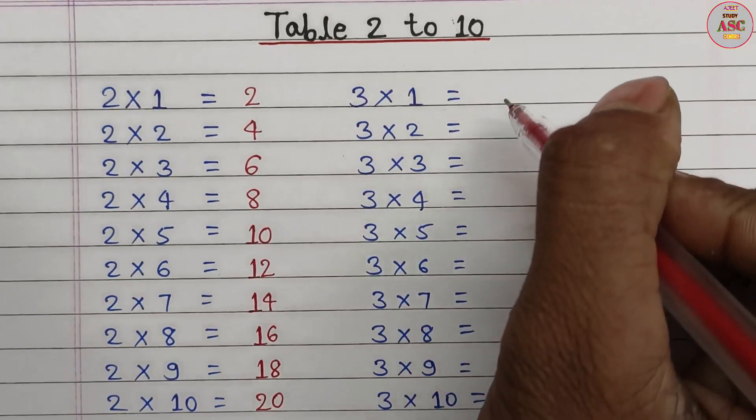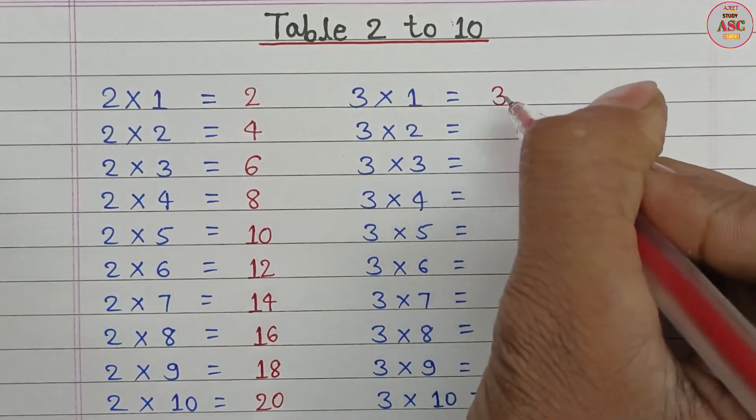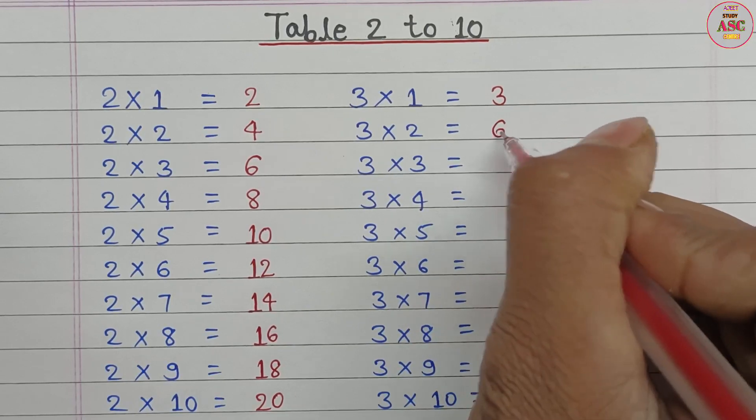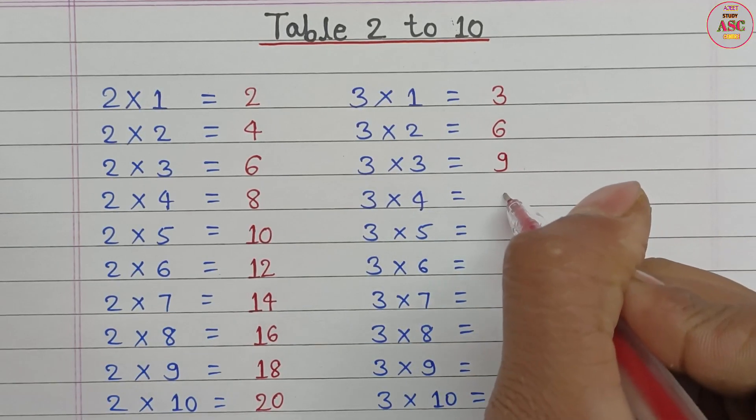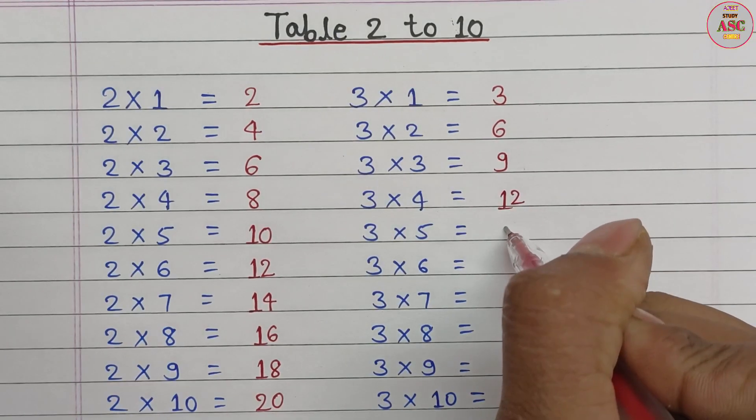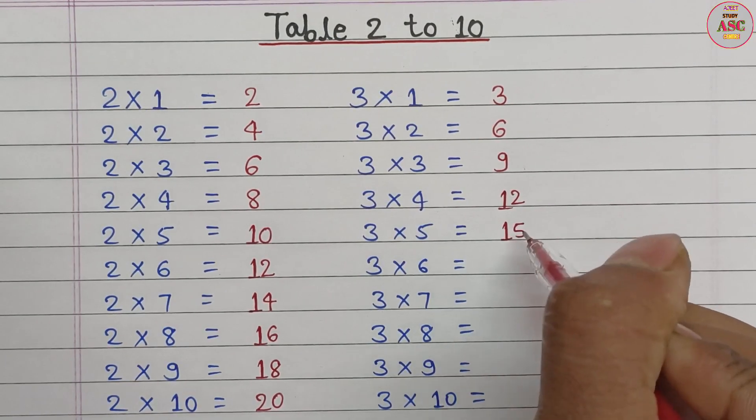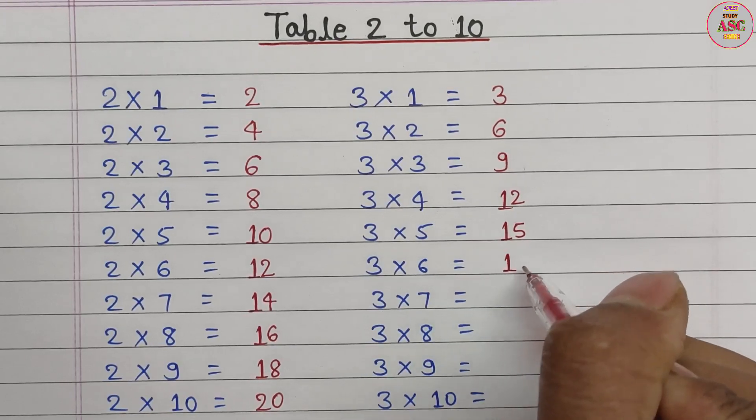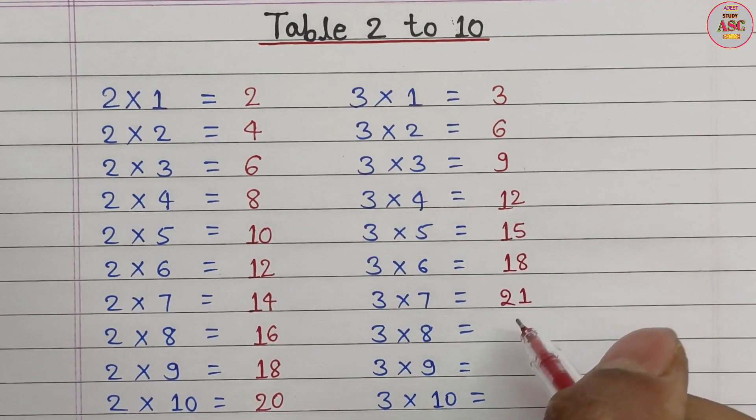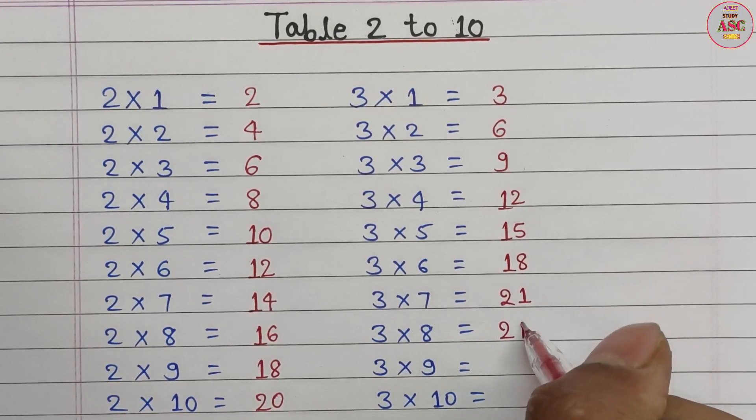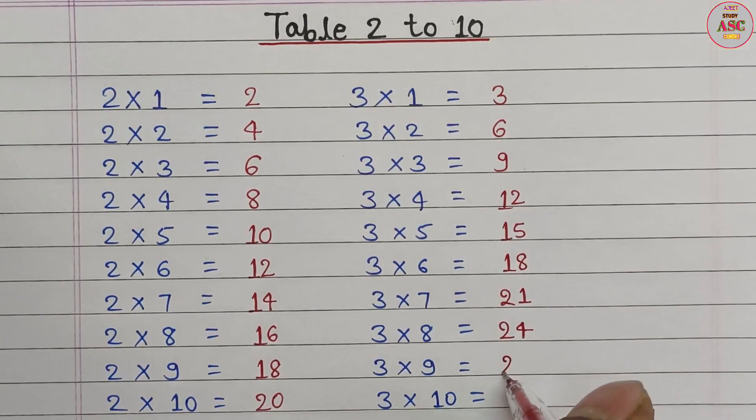3 times 1 equals 3. 3 times 2 equals 6. 3 times 3 equals 9. 3 times 4 equals 12. 3 times 5 equals 15. 3 times 6 equals 18. 3 times 7 equals 21. 3 times 8 equals 24. 3 times 9 equals 27. 3 times 10 equals 30.